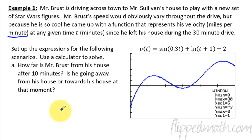So what we're trying to do is set up an expression for each of these scenarios, and then we'll just use a calculator to solve it. So how far is Mr. Brust from his house after 10 minutes? The way you do that is we just want to see what's the net change from the beginning to end. So if we go from 0 to 10 minutes and integrate the velocity, we are going to get, oh I should probably add a little dt here, and then it's going to be approximately, now we can plug this whole thing straight into the calculator.